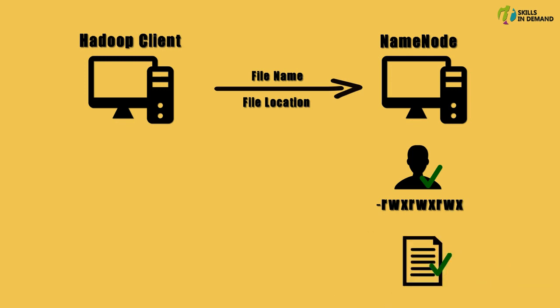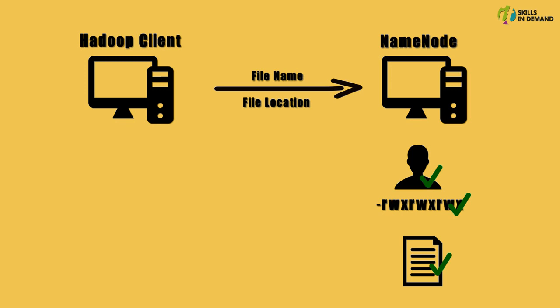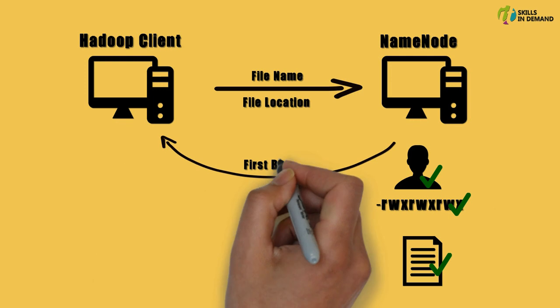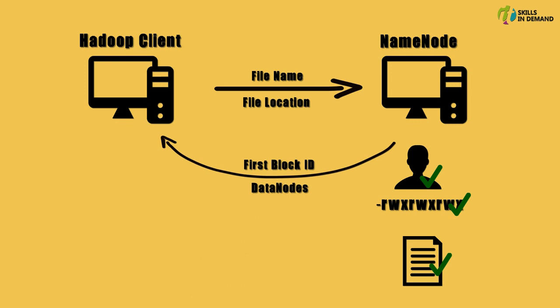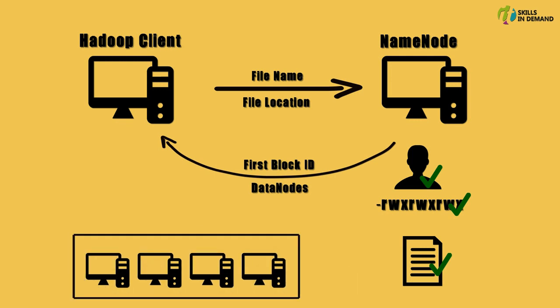If this file is present and the requested user has all the appropriate permissions to access this file, then the name node would respond back to the client with the first block ID of the requested file, along with the list of all the data nodes that have a copy of the requested file, sorted by distance. This distance is calculated based on which rack the requested file is present on — whether the blocks are on the same rack or a different rack. The configuration data is used to calculate the rack distance as it holds information about all the hosts and racks that are part of the cluster.